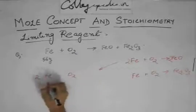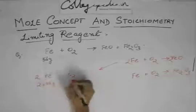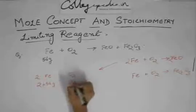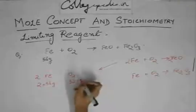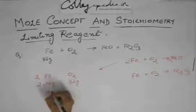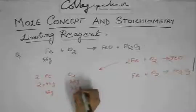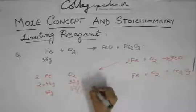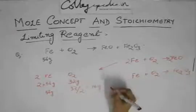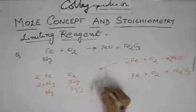So 2 times 56 grams of Fe react with 32 grams of oxygen. So 56 grams of Fe would react with 32 by 2, which is 16 grams of oxygen. So we got one answer.